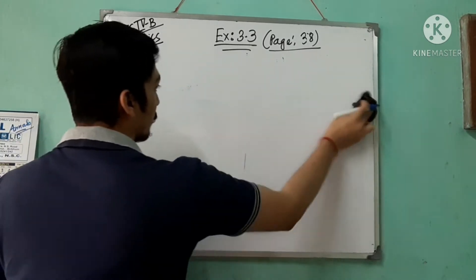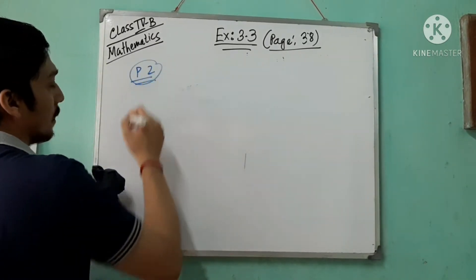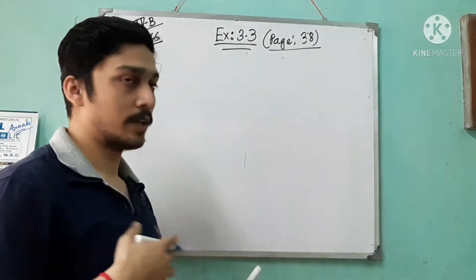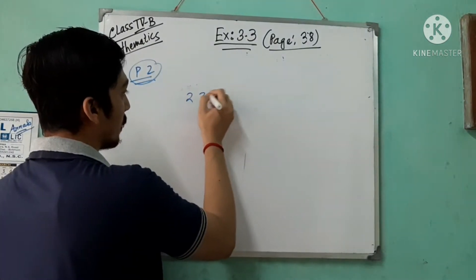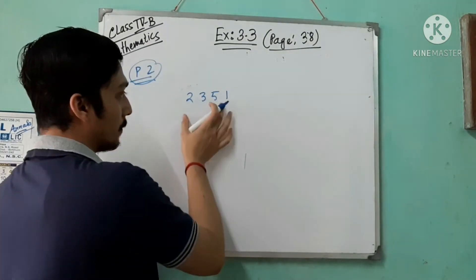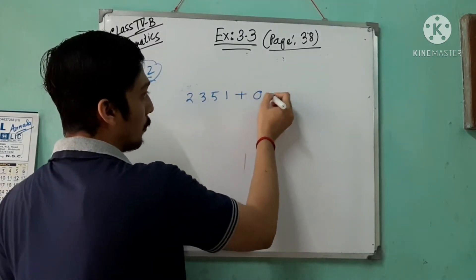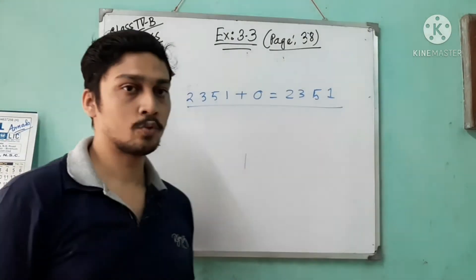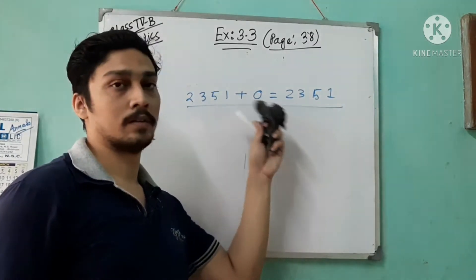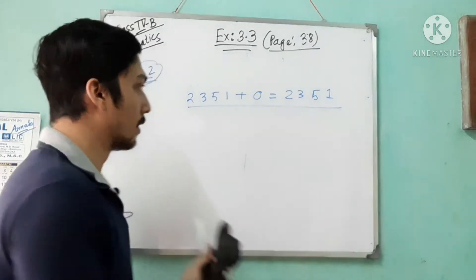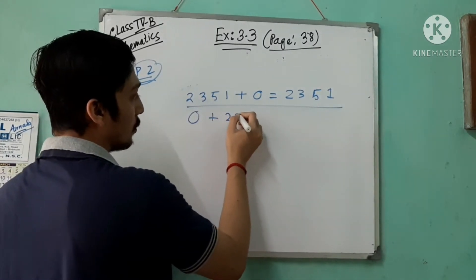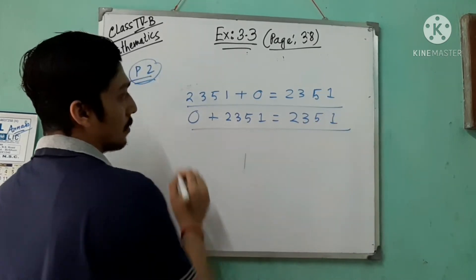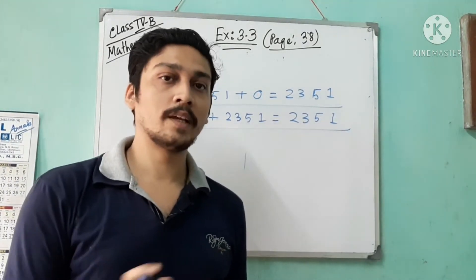Property number two: if you add any number with zero, you get the number itself. Suppose 2,351. If you add 2,351 with zero, you will get 2,351 — the same number. So if you add zero with any number, you will get that number itself. This is the additive identity property.